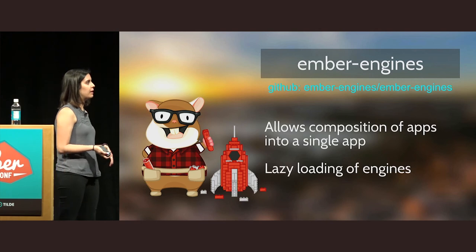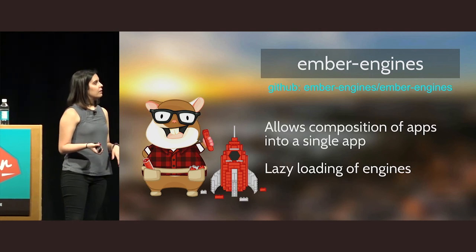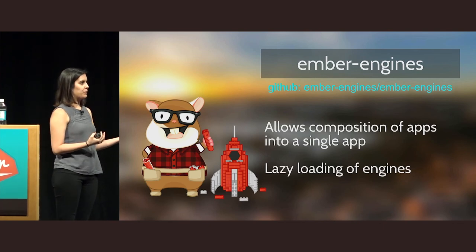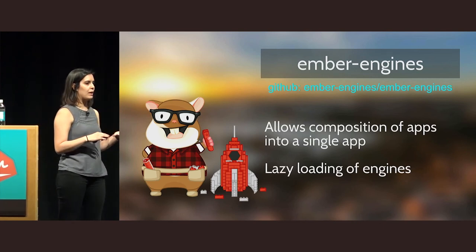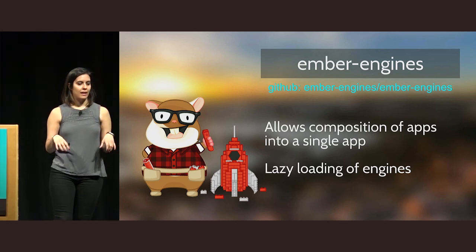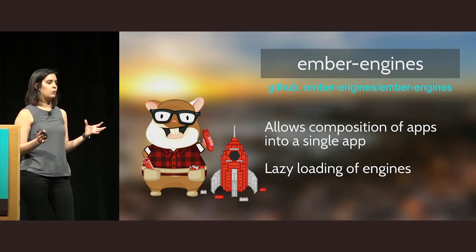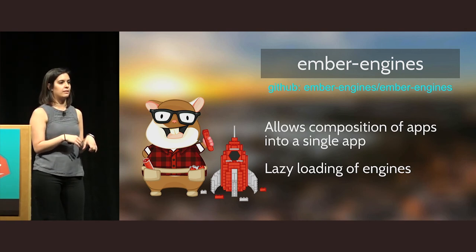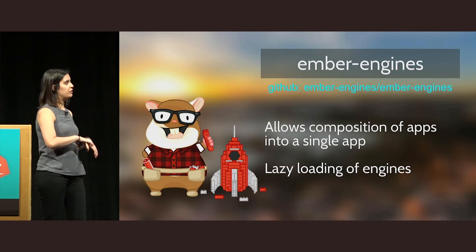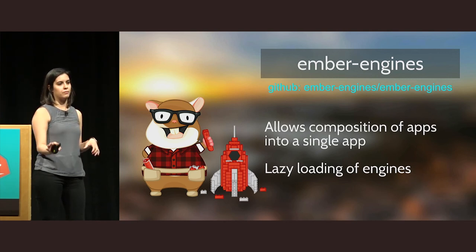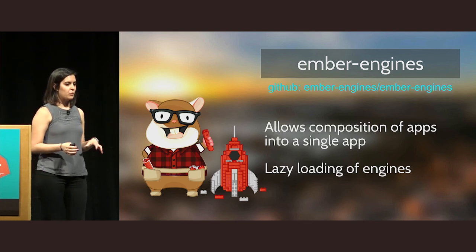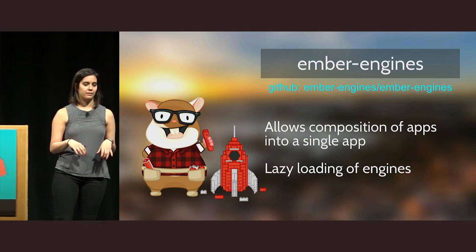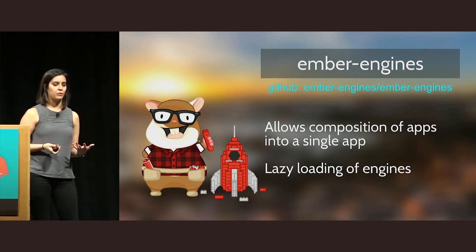Another way is using Ember Engines. Ember Engines allows you to compose your app into smaller parts, and with lazy loading you can ensure the browser doesn't download the whole JavaScript — it downloads just what it's accessing at the time. Once you navigate to another route, it downloads the JS for that route if it's in another engine. So if your app is too large, it gets cut into smaller pieces and the JavaScript size is reduced.